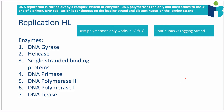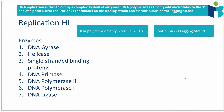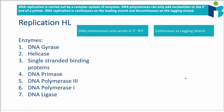Now let's get into the meat of it — how exactly does replication occur? There are seven different structures or molecules you have to know about, and technically only six of them are enzymes because we also have single-stranded binding proteins, but mainly these are enzymes.